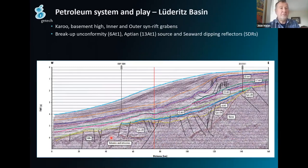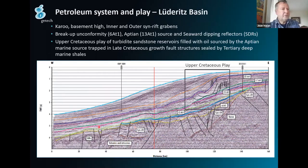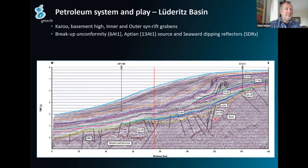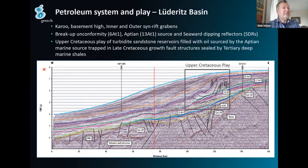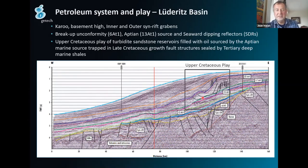An example from the Lüderitz Basin seismic line — there's the Karoo, a classic synrift sequence, and the early drift. Yellow is drift onset and drift infill; the Aptian source rock is in blue, and then the potential Turonian source up there with quite an exciting undrilled play. This is a classic turbidite sandstone reservoir filled with oil sourced from the Aptian marine source rock. It got trapped in late Cretaceous–Tertiary growth fault structures, and it's sealed by the Tertiary marine shales.